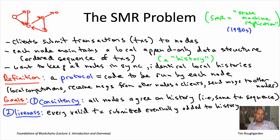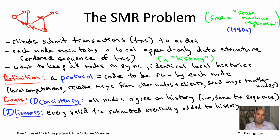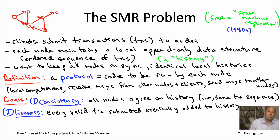The word 'valid' in the liveness definition depends on the details of the blockchain — for example, a transaction should be digitally signed by the sender, and if it's a currency transfer there should be sufficient currency in that user's account. Any transaction that's valid and eligible for inclusion should eventually get added by some node, which by consistency means it gets added by all nodes. One might want an even stronger version of liveness with concrete bounds on how long it takes — we'll probably see examples of that later in the lecture series.